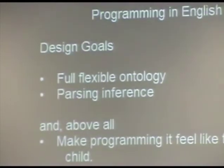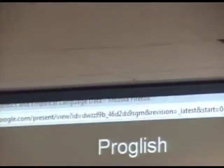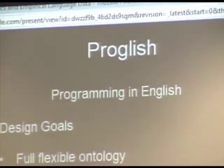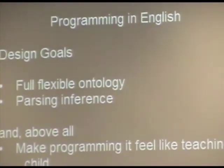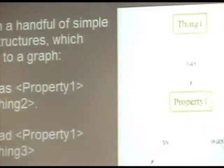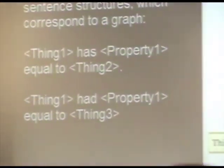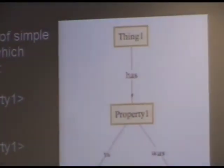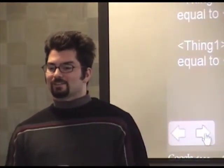Something I've been working on in the last couple of months is Proglish — programming in English. The design goals are that it has a full ontology, it has parsing inference, and it has the quality of making programming feel like teaching a child. It works by having a handful of hard-coded sentence structures that correspond to specific graph operations — adding a node, adding an edge, deleting an edge — with various node types and edge types. The node types are things, properties, numerics, and reference. Just think of them as things and properties.